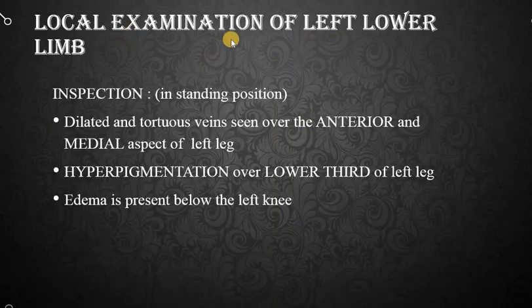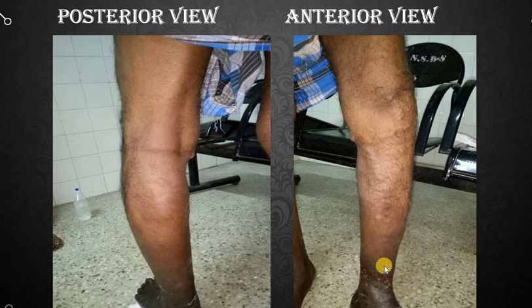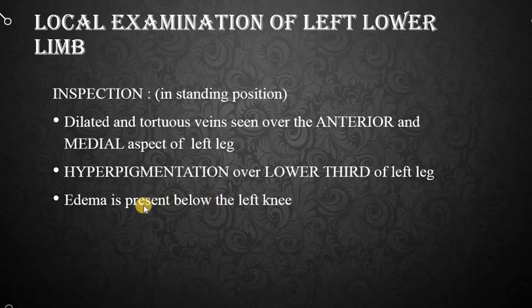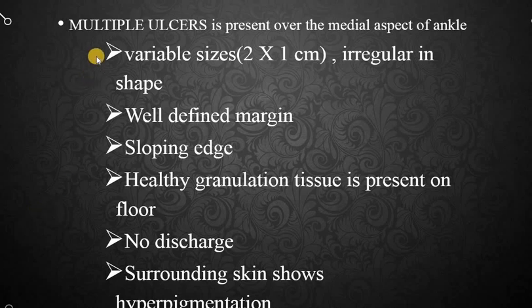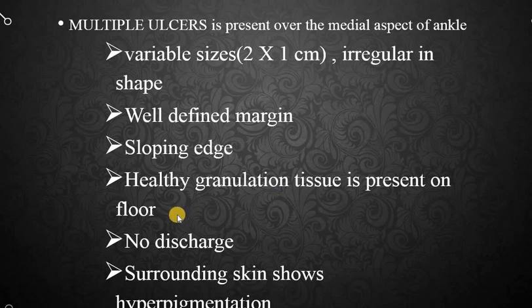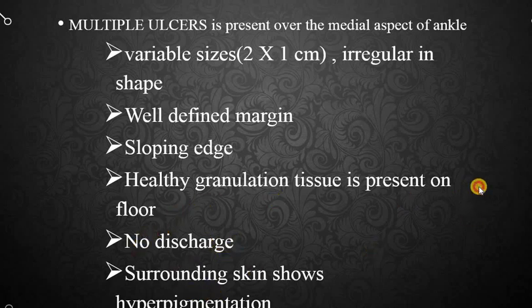Local examination of the left lower leg — inspection is done in the standing position. There are dilated and tortuous veins over the anterior and medial aspect of the left leg, with hyperpigmentation over the lower one third of the limb. Edema is present below the left knee. There are multiple ulcers over the medial aspect of the ankle, variable in size; the largest is 2 × 1 cm, irregular in shape, well defined margin, sloping edge, with healthy granulation tissue on the floor, no discharge, surrounding skin shows hyperpigmentation, and no redness. No scars, no loss of hair, no brittleness of nails.